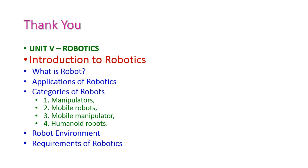So far we have seen the introduction to robotics from the fifth unit. In today's class we learned what a robot is, the applications of robots, and the four different categories of robots: manipulators, mobile robots, mobile manipulators, and humanoid robots. We also covered the robot environment and the requirements of robotics. In the next class we will see another important topic from the fifth unit.